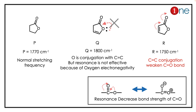When conjugation increases, you lose the carbonyl stretching frequency. The normal value is around 1770 cm⁻¹. For compound Q, oxygen has a lone pair, but oxygen is very electronegative and does not donate electrons, so the C=O stretching is stronger — only the electronegativity effect of oxygen dominates.